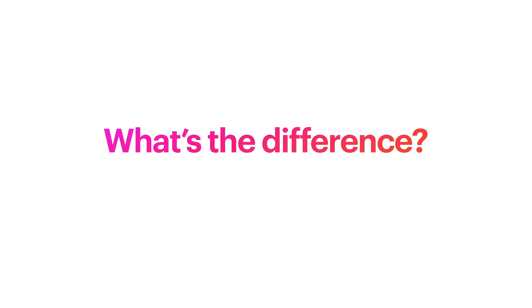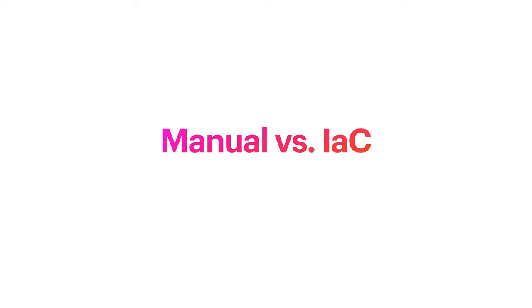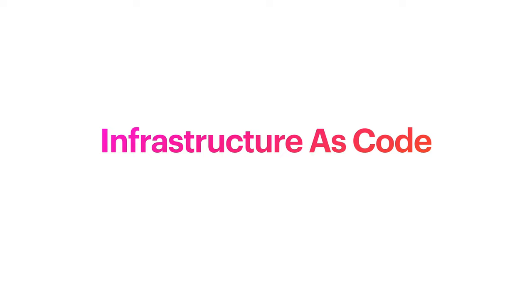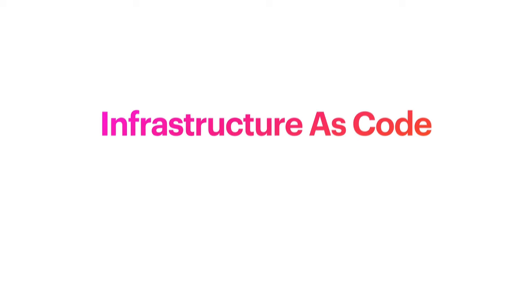So what's the difference between these different approaches? One big difference is manual versus infrastructure as code. Creating the bucket manually in the console is kind of a one-off event, but really we want to define our infrastructure as code.